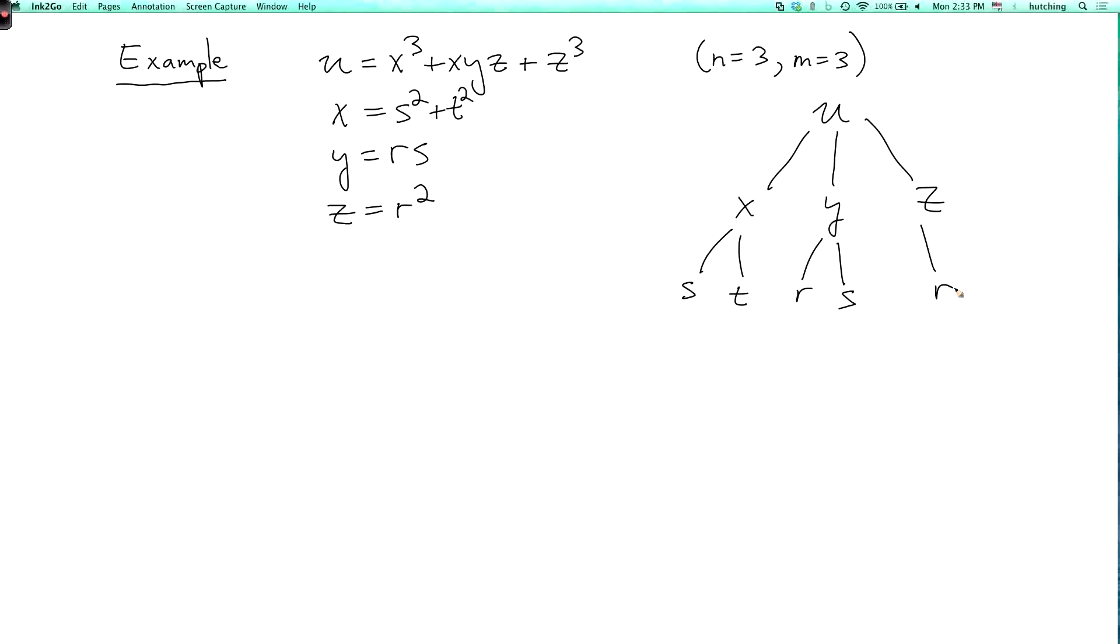So what the chain rule tells us, let's say we want to calculate partial u partial r. The chain rule says we have to sum over all of the variables that u depends on. So the first term is partial u partial x, and then we multiply by partial x partial r. And the second term is partial u partial y partial y partial r. And the third term is partial u partial z partial z partial r.